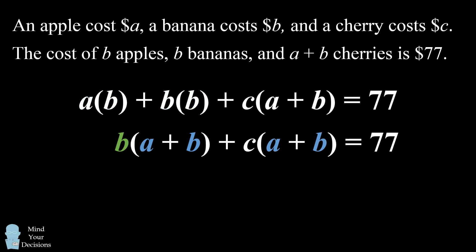In this next equation, we have a common factor of A plus B. So we'll factor that out, and we have A plus B times B plus C equals 77.